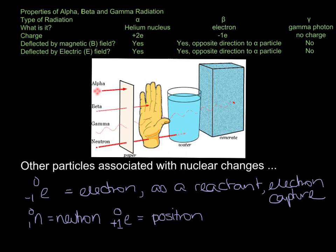There's a few other particles that I'm not going to go into much detail with that occur along with nuclear changes. You have the electron, which is our beta particle, but when it appears as a reactant, we call it electron capture. Then we have 1,0 for the neutron, and then 0, positive 1 with the symbol E, that's for a positron. And you'll see these popping up in different nuclear reactions.